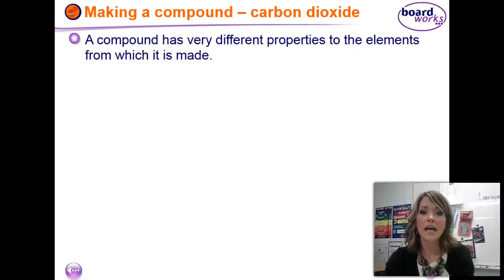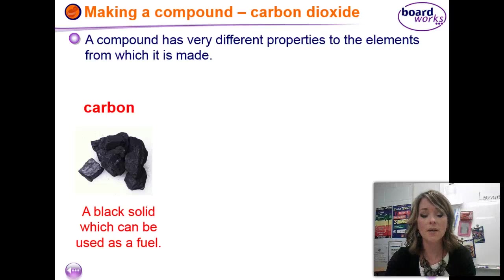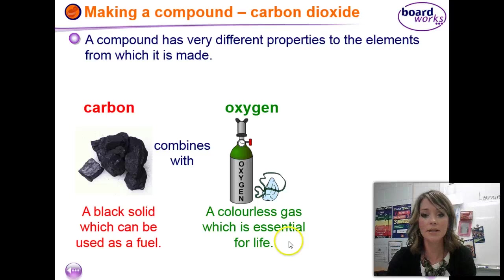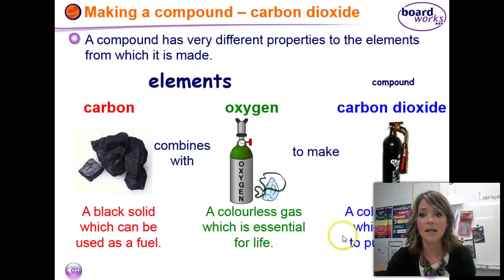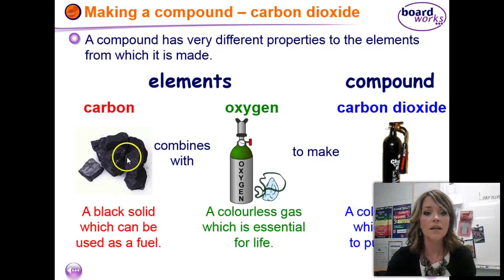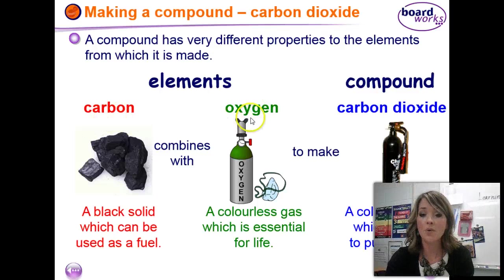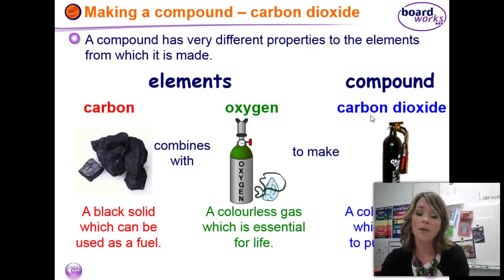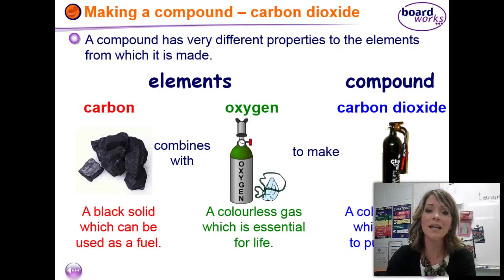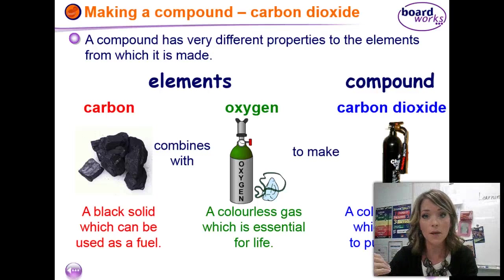A compound can be completely different than the elements that make it up — it can have completely different properties. Carbon dioxide, for example, contains carbon, which is a black solid, and oxygen, which is a colorless gas essential for life. And you end up with carbon dioxide — a colorless gas that's used to put out fires. The properties of carbon and oxygen are very different from the compound you get when you combine them. You're combining these in a one-to-two ratio. If you combine one atom of carbon and one atom of oxygen, you get carbon monoxide — a completely different substance. It is a colorless, odorless gas that takes up space on your red blood cells, so they don't have room for oxygen, and you basically suffocate.